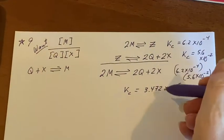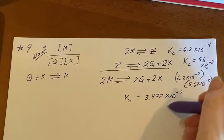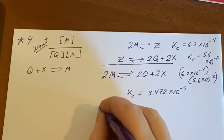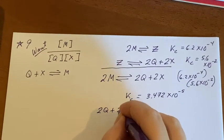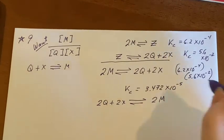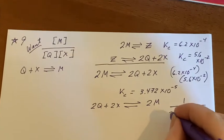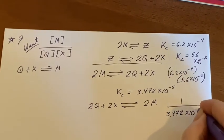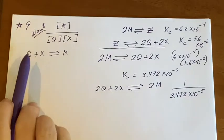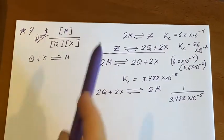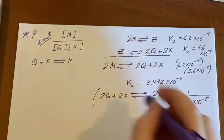If it's backwards, that means I'm going to have to do the reciprocal of this. If I flip it around so that it's 2Q plus 2X becomes 2M, then I would want one over this. So one over the 3.472 times 10 to the negative fifth. But I'm still not done because it's twice as big as it should be. The other thing I want to do is take half of it then. If I take half of it, that's the same as taking the square root.